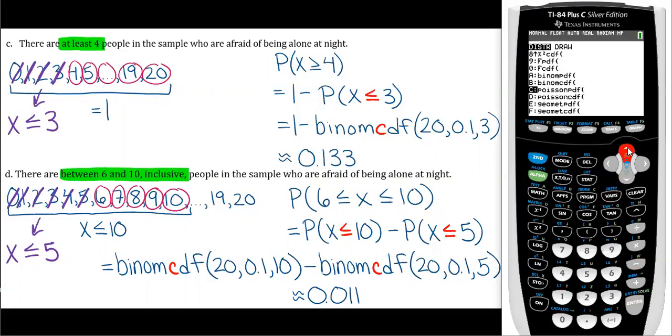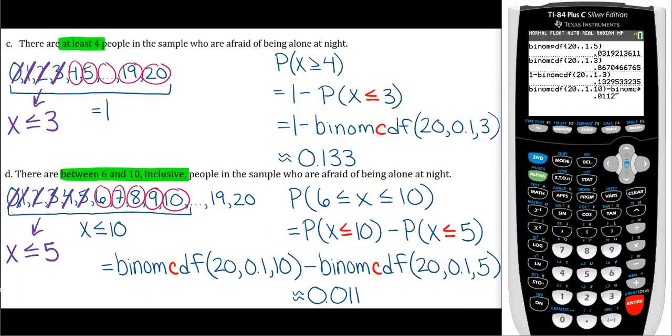So second bars, here's binomial CDF, 20, 0.1, and this value is five. Then click enter, and you get the 0.011.